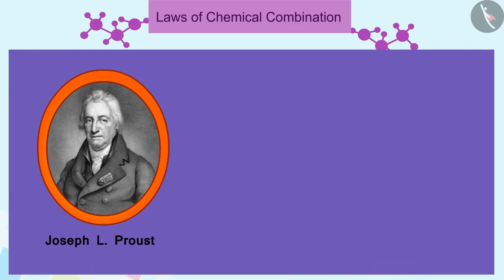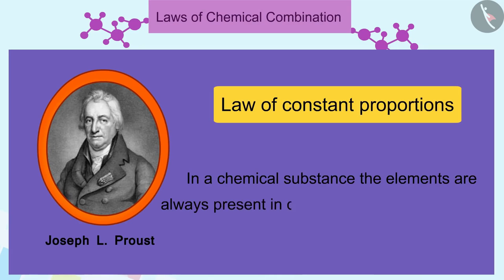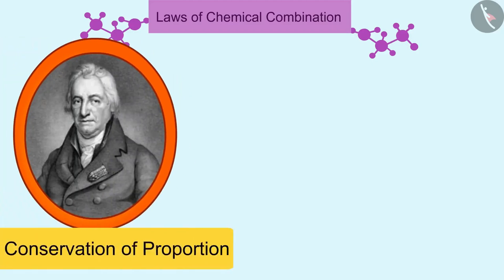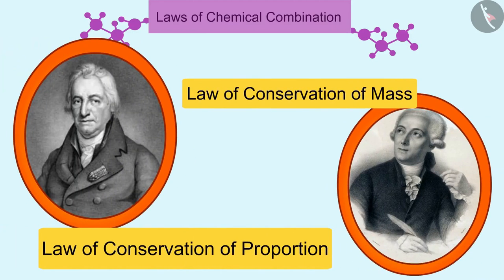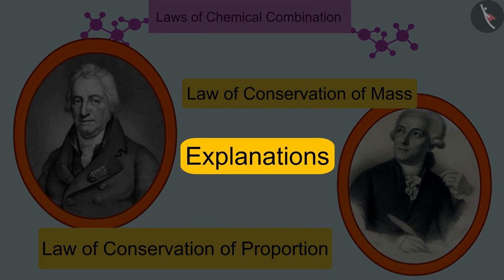This law was stated by Proust as, In a chemical substance, the elements are always present in definite proportions by mass. Scientists defined both these rules, but the next problem faced by them was to give appropriate explanations of these laws.